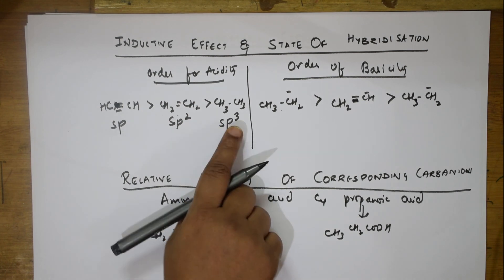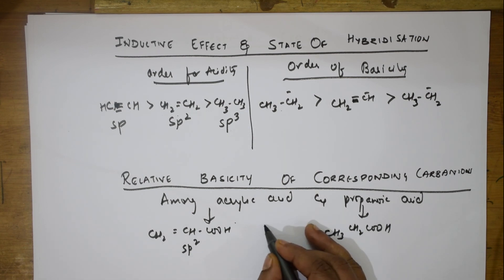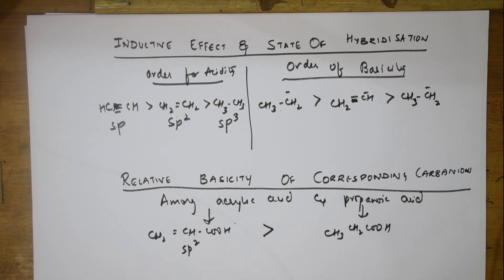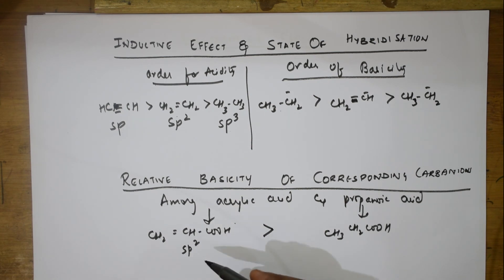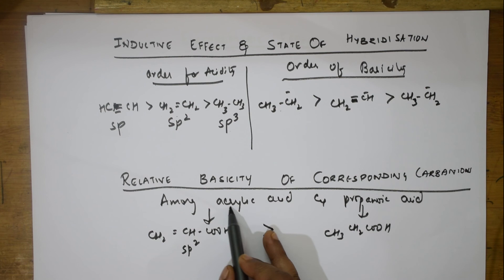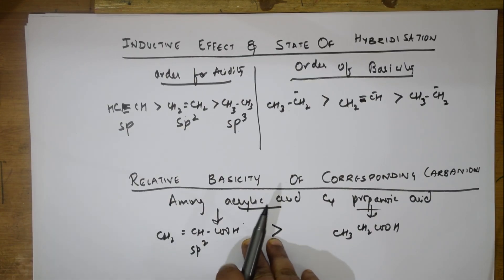Compared to sp3, the sp2 hybridization is more electron-withdrawing, so acrylic acid is a stronger acid than propionic acid. Though resonance tends to decrease acidic strength, the hybridization effect dominates. Therefore, acrylic acid is more acidic than propionic acid.